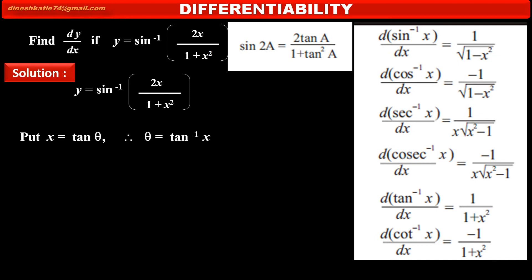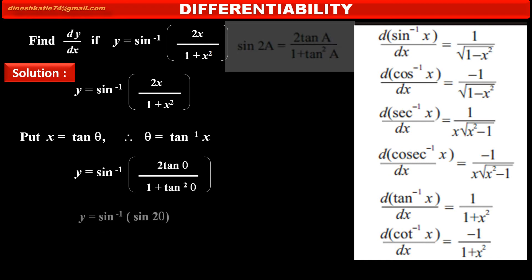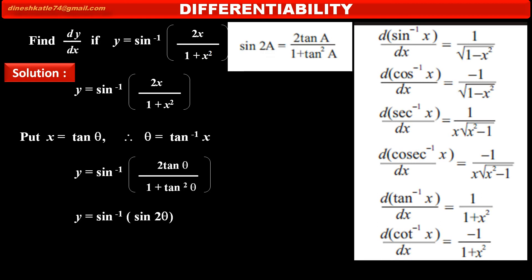Therefore, we can write theta is equal to tan inverse x. So y is equal to sin inverse of — substituting x is equal to tan theta — we get 2 into tan theta upon 1 plus tan square theta. Therefore, according to the above formula, we can write y is equal to sin inverse of sin 2 theta.